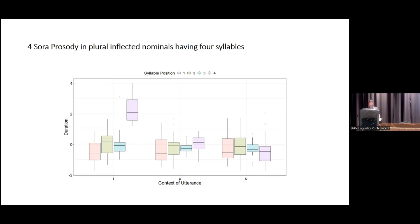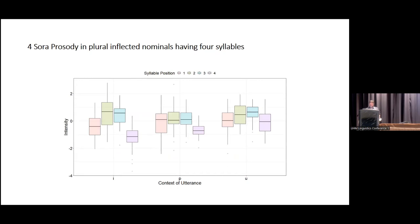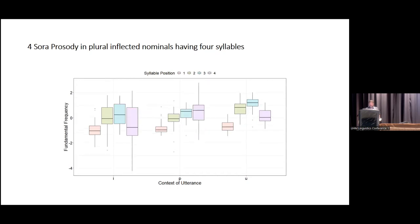Turning to four-syllable noun forms: with regard to duration, in isolation and phrasal contexts we find final position as the peak, but the second position in an unaccented frame. Intensity is fairly consistent, peaking on the second syllable, as we saw with the trisyllabic nouns. Fundamental frequency shows the same type of pattern — peaking on the penultimate or ultimate syllable depending on context.